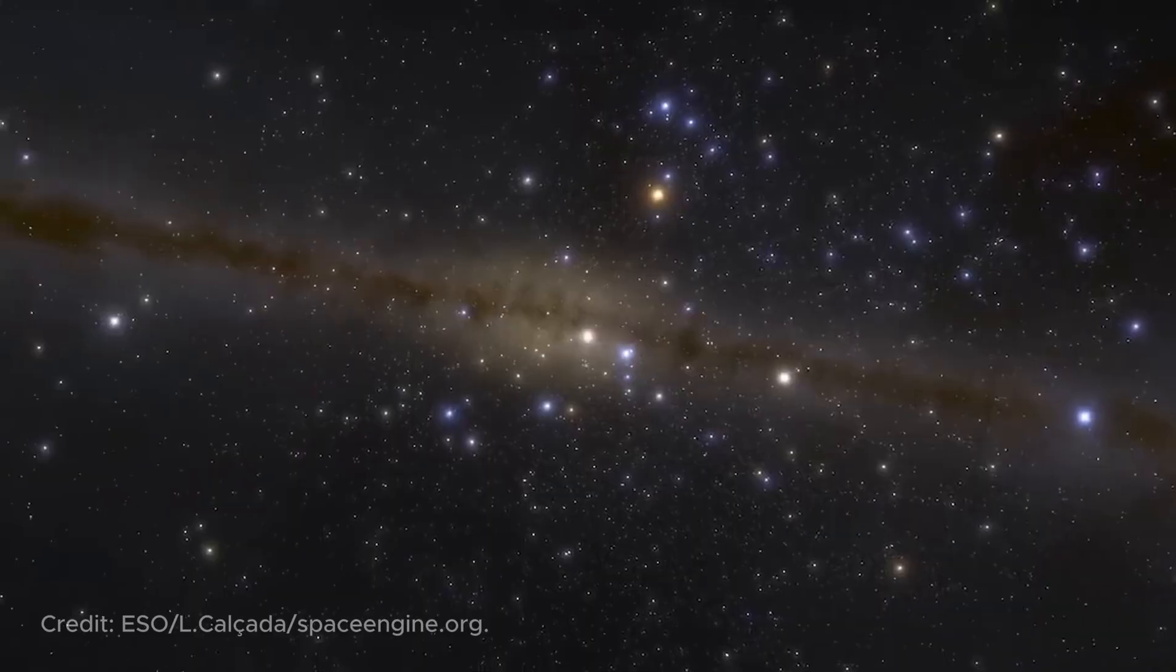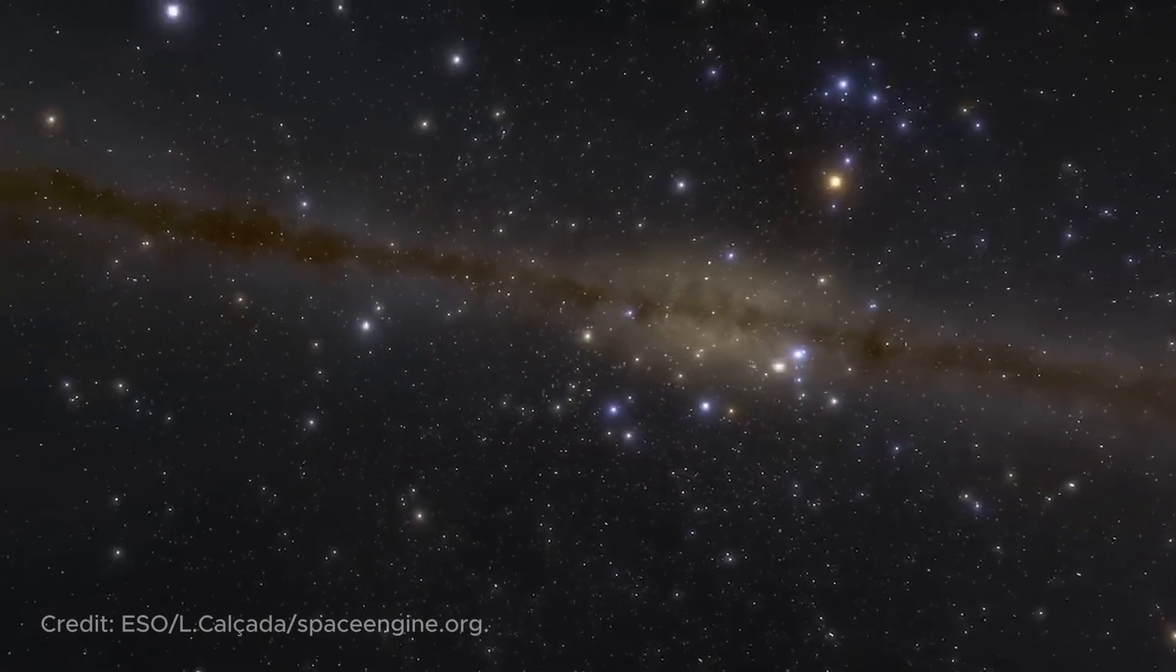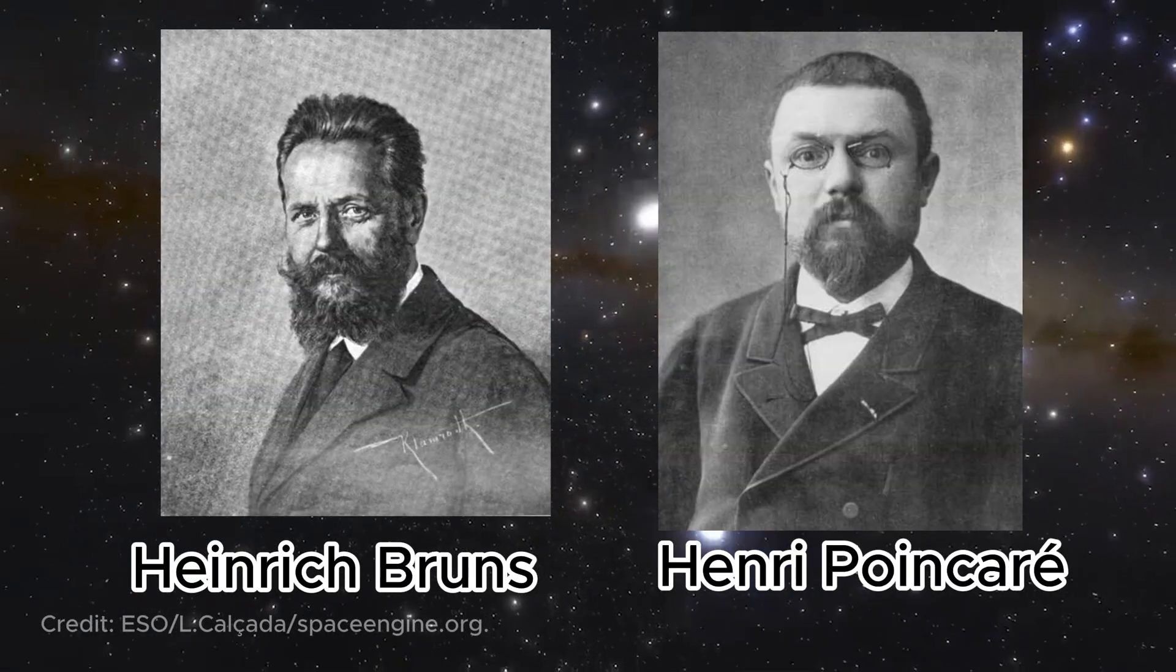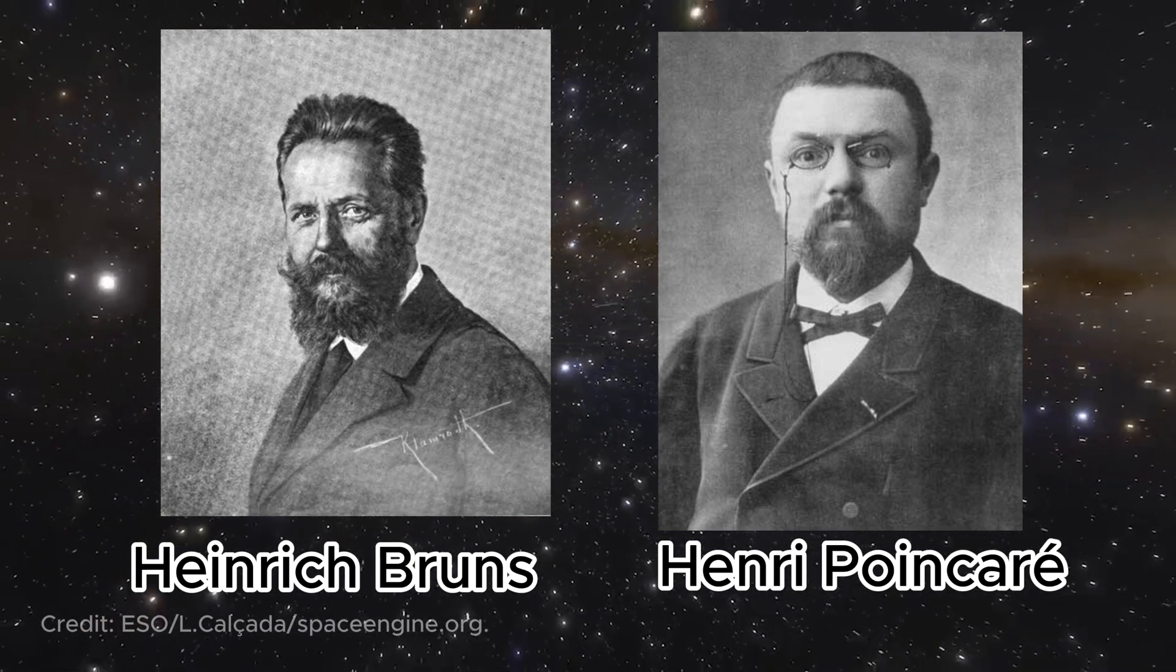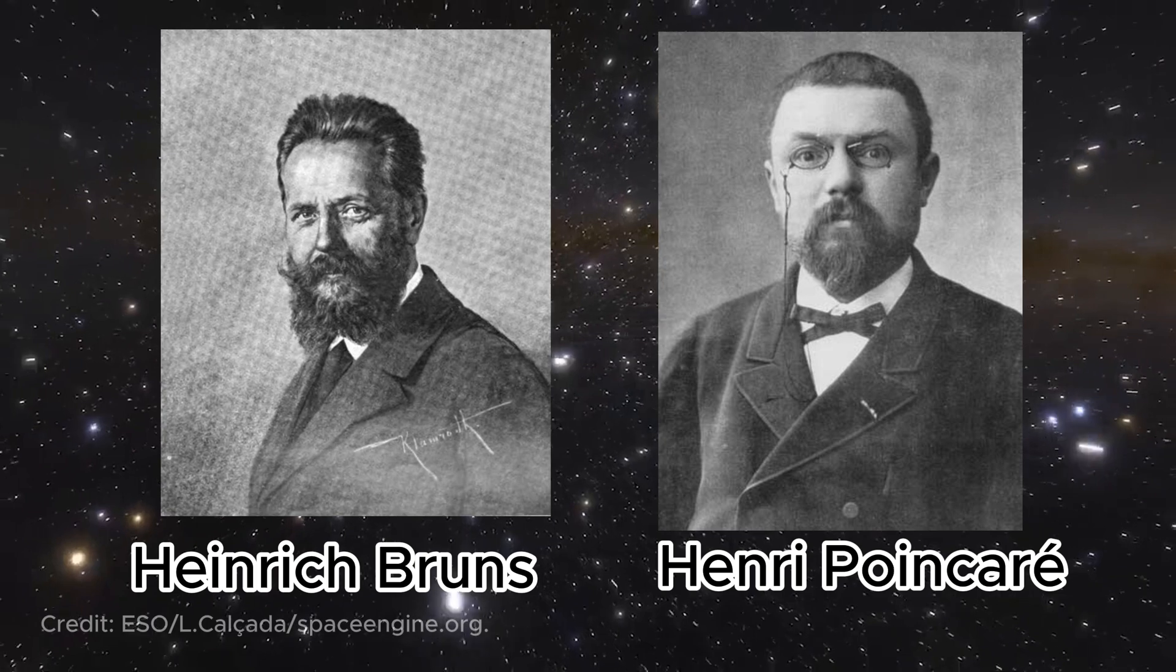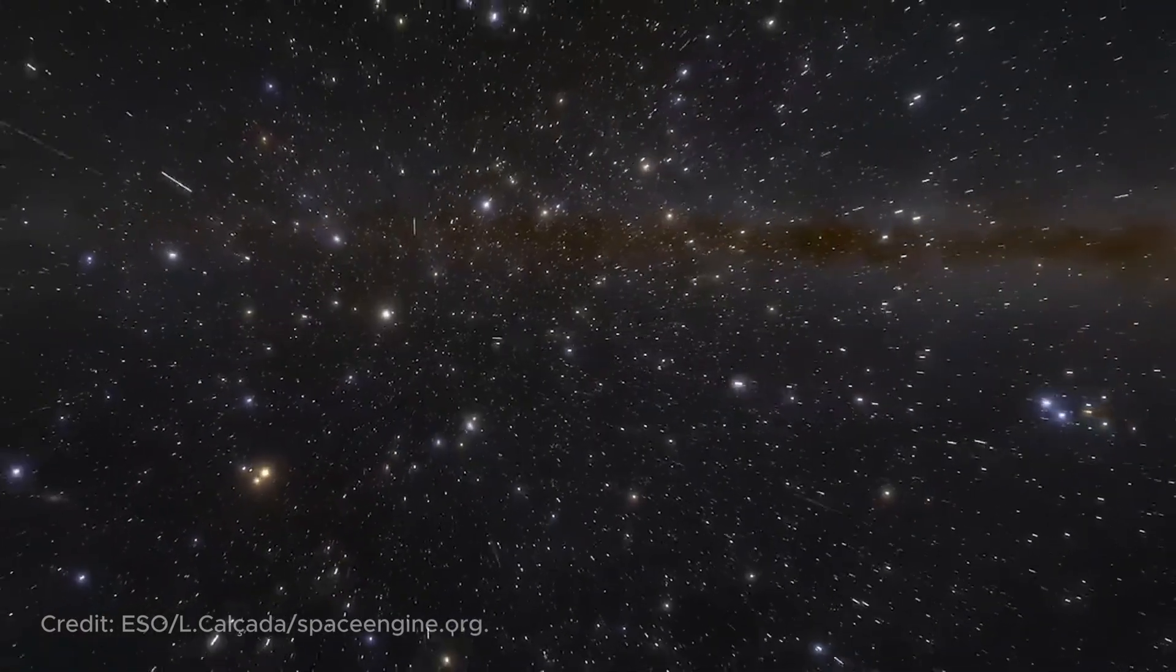Moreover, in the late 19th century, mathematicians Heinrich Bruns and Henri Poincaré showed the impossibility of finding a general solution to the three-body problem, meaning it's not that we are dumb, but that it's fundamentally impossible to do so.